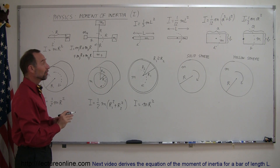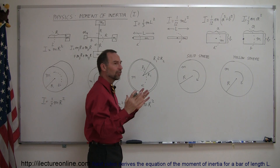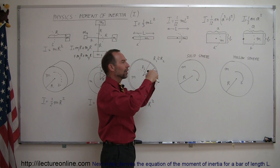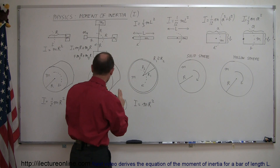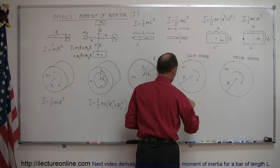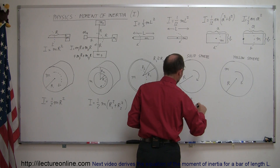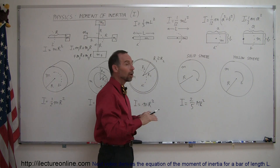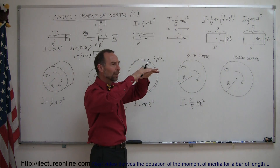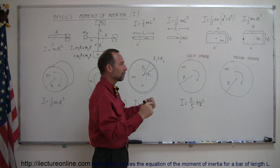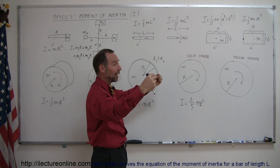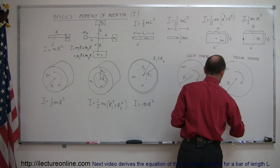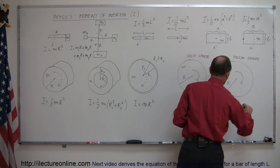Two more objects: a solid sphere and a hollow sphere. With a solid sphere, mass is distributed throughout, and unlike a cylinder the distribution is different, giving I = (2/5)MR². For a hollow sphere, the mass is not all at distance R because it's a sphere, not a cylinder — in some places the mass is close to the axis and in others it is R away — so I = (2/3)MR².